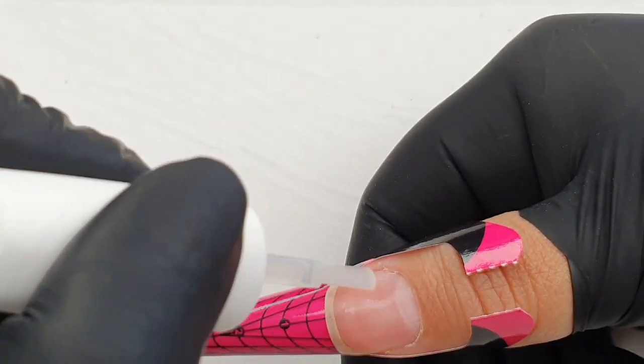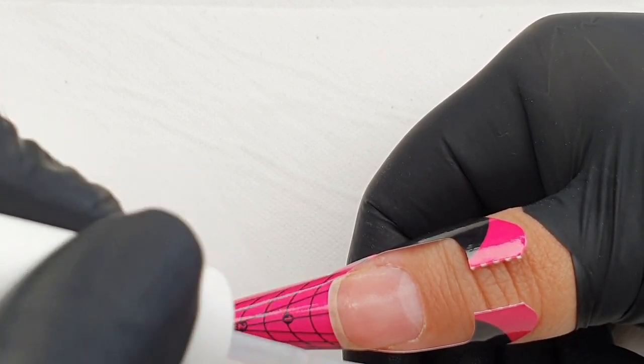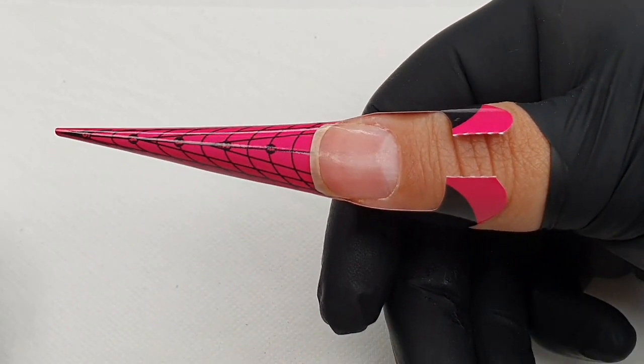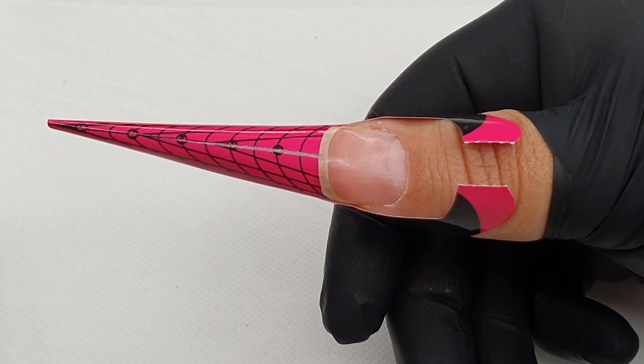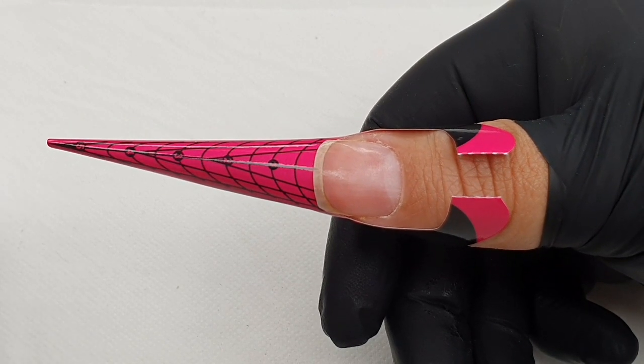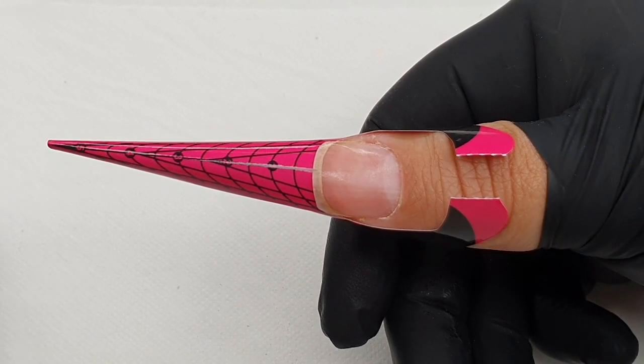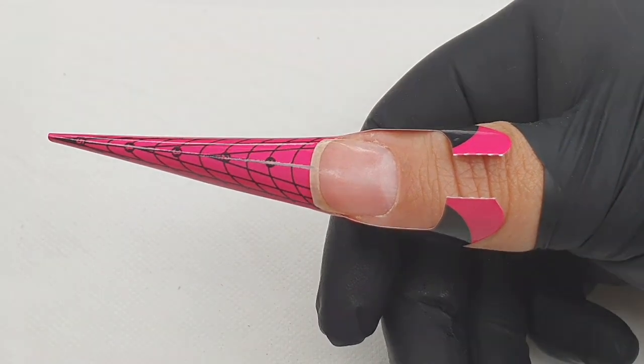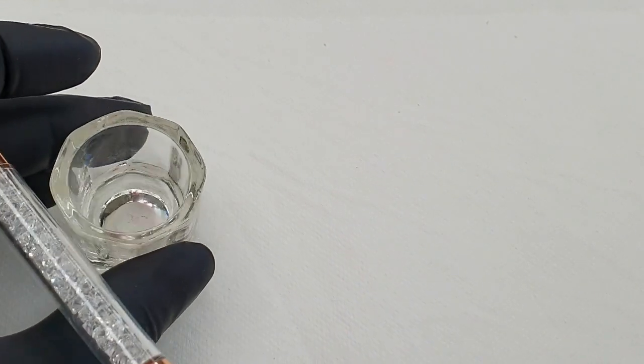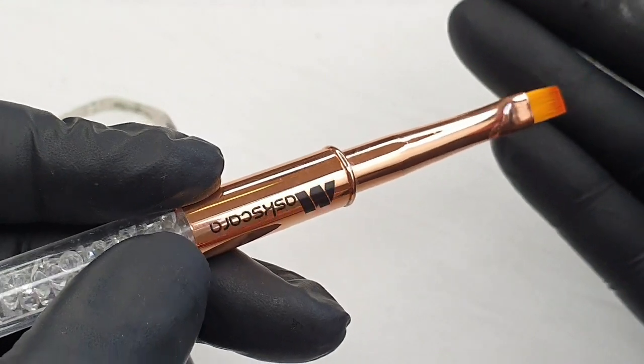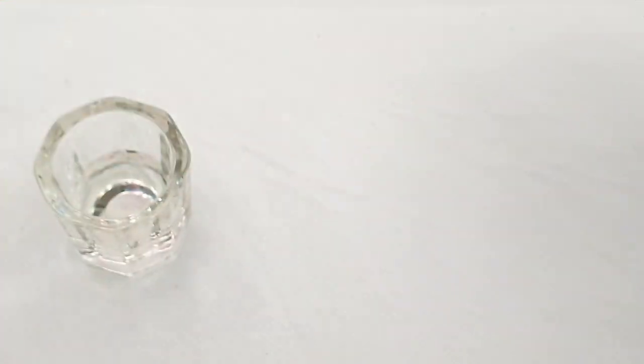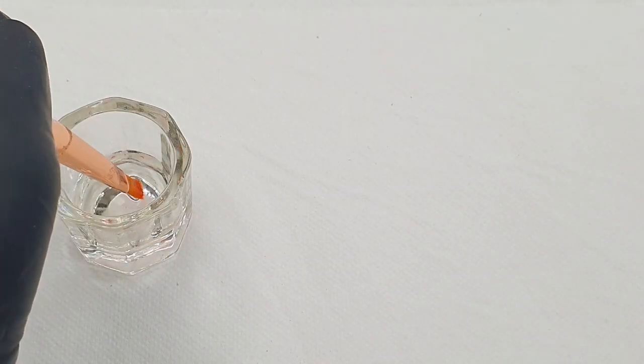Now I'm applying my protein bond. The best tip I can give you here is that once you apply protein bond, do not touch the surface. Also, don't let your protein bond dry excessively. When you apply it, start working immediately so that you don't have too much drying time on the nail plate.